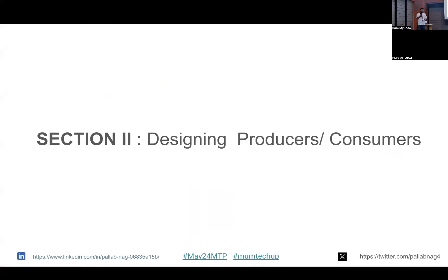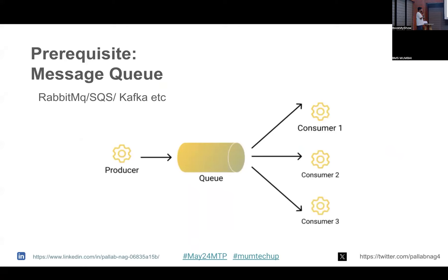So far we've created our consumer pool. Now, for the main segment of this topic — how can we design producers and consumers — we need a bit of prerequisite knowledge about message queues. A message queue is a system where producers produce to the queue and consumers consume from it. We can have a number of producers and consumers. Different tools are available in the market: RabbitMQ, SQS, Kafka, and others.